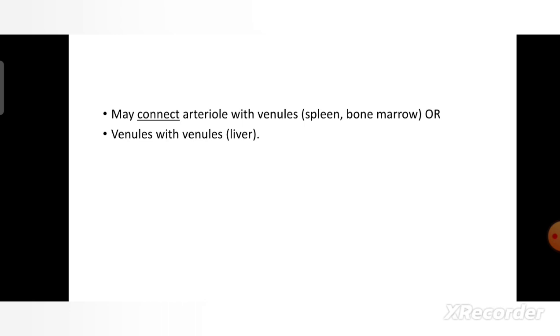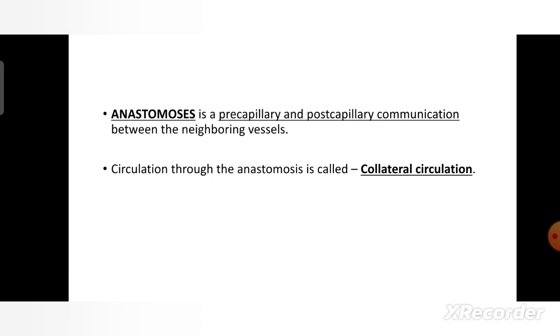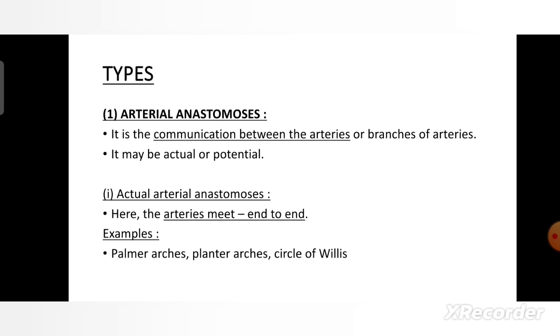Sinusoids connect the arteriole with venules, or venules with venules. Next are the anastomoses. Anastomosis is the pre-capillary and post-capillary communication between the neighboring vessels. Circulation through the anastomosis is called collateral circulation.